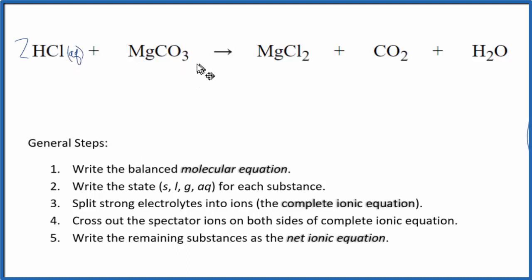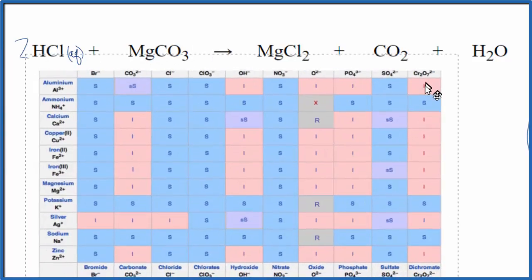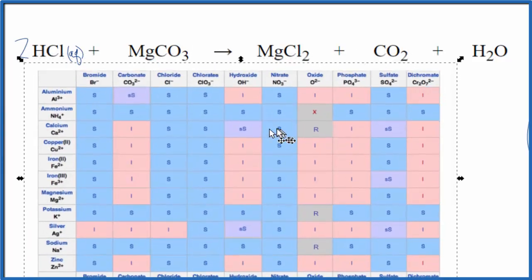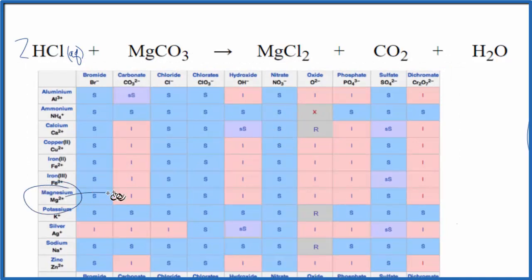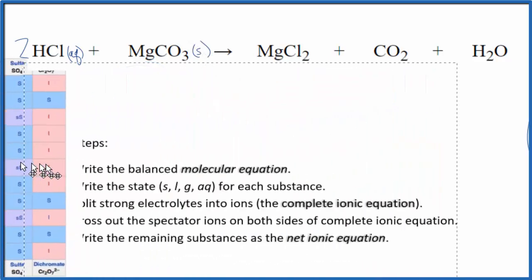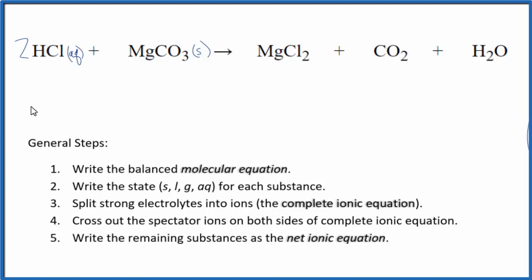So carbonates are often insoluble, and I'd like to look at a solubility chart just to make sure. So here's our chart. We have magnesium, the Mg2 plus ion, and the carbonate, CO3 2 minus, and it is insoluble. So that means that it's not going to dissolve in water and that it'll be a solid. So we know that our magnesium carbonate is going to be a solid.